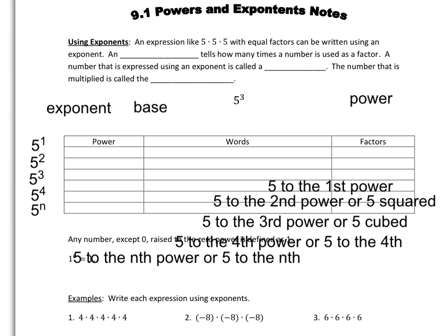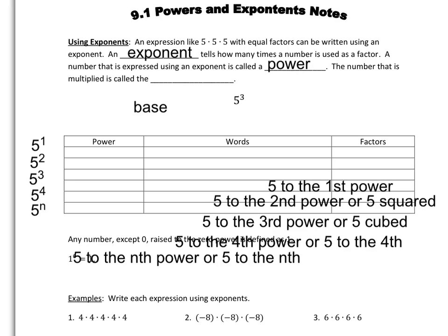Today we're going to talk about powers and exponents. When you're using exponents, you take an expression like 5 times 5 times 5, which has equal factors — it's just 5 repeating itself. You can write that using an exponent. An exponent tells you how many times a number is used as a factor, in other words, how many times you're multiplying it. A number expressed using an exponent is called a power.